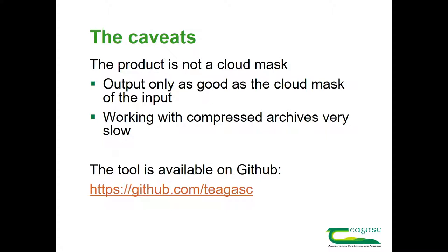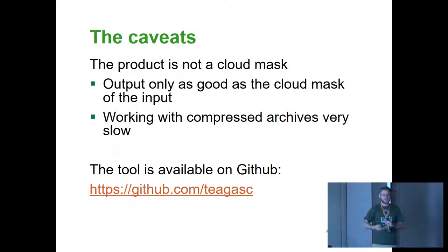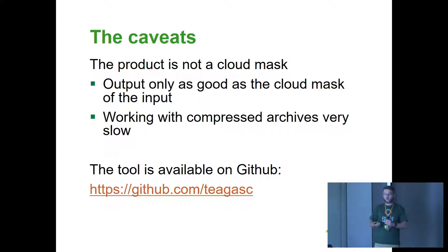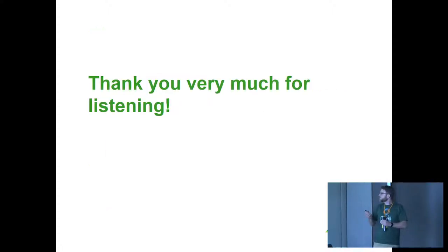There are some caveats. The tool only uses the product-specific cloud mask — I haven't developed a new cloud mask — so quality of output depends on the quality of the cloud mask provided. Sentinel-2 Copernicus products in particular tend to under-identify clouds, meaning some flagged images may still be cloudy. Working on compressed archives is slow due to decompression time. The tool is a work in progress, built out of necessity; I add to it when we acquire new archives. It is available on GitHub if you're interested. Thank you very much for listening.